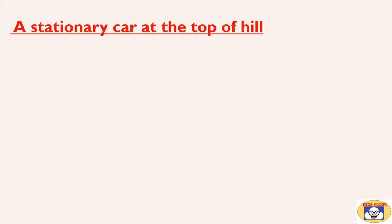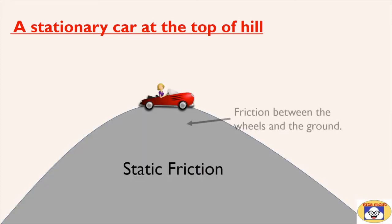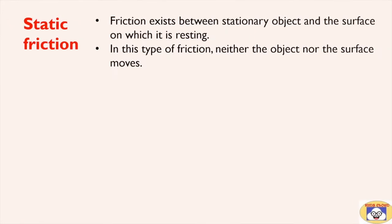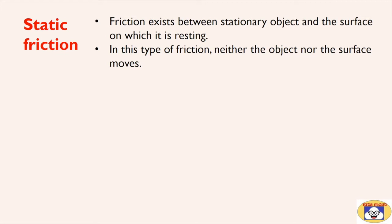Any object resting on a surface is an example of static friction. For example, a stationary car at the top of a hill — the car is stationary due to friction between the brakes and wheel hub, and also there is friction between the wheels and the ground. Thus it is an example of static friction. Friction that exists between a stationary object and the surface on which it is resting is called static friction.